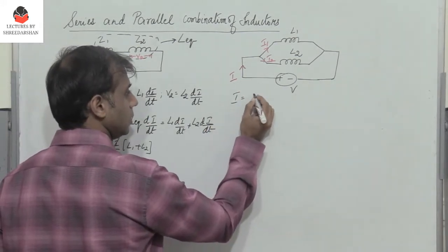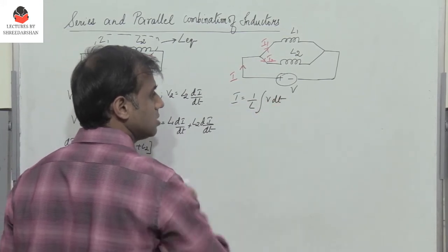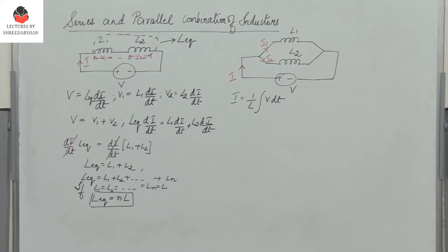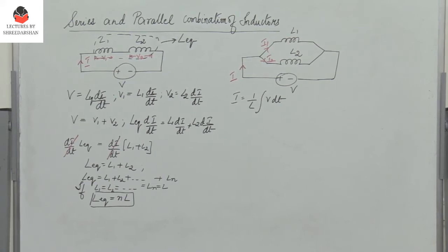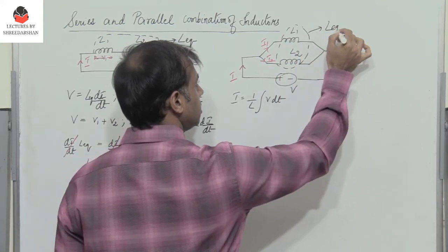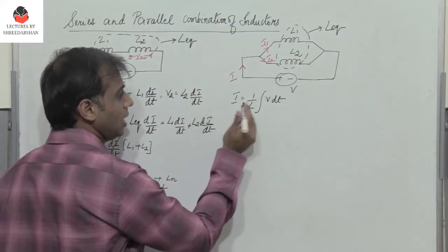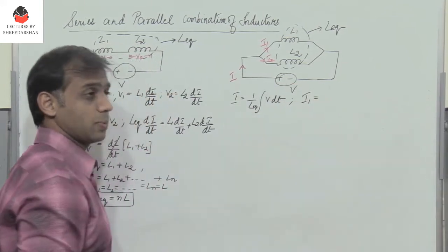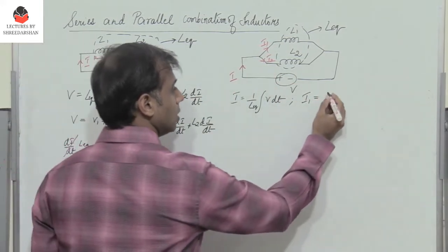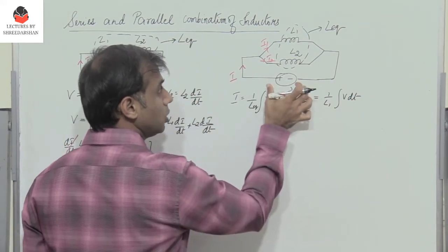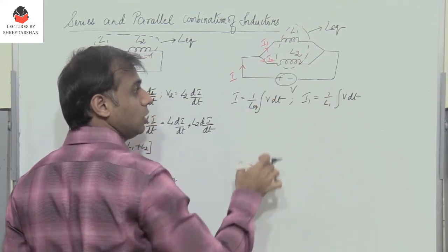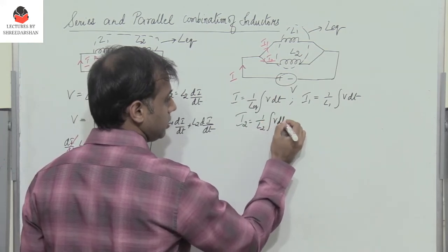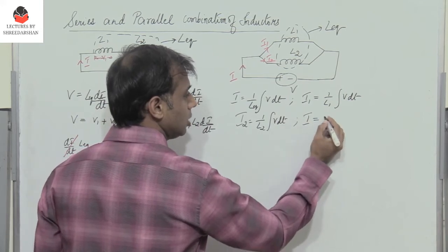The general expression for current is I equals 1/L times the integral of V dt. Replacing L1 and L2 with a single equivalent inductor L equivalent, we have I equals 1/L equivalent times the integral of V dt. Similarly, I1 equals 1/L1 times the integral of V dt, and I2 equals 1/L2 times the integral of V dt, since the same voltage V appears across both inductors.